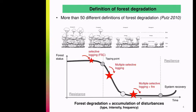Fire is another disturbance that strongly destroys the forest structure. Other regeneration trajectories are possible. If deforestation is now slowed down, most forests are in degradation trajectories that are increasing.